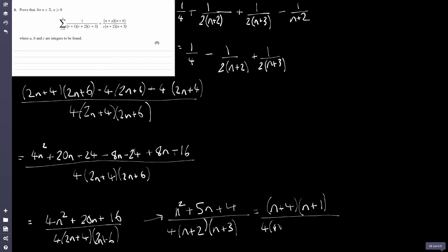So we arrive at (n+1)(n+4) over 4(n+2)(n+3), which is the required form given in the question. That's a five-mark question — quite long but a good question.